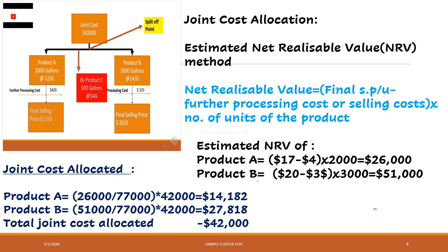In this slide I'm explaining how to allocate cost using the estimated net realizable value method. The formula for net realizable value is: final selling price per unit — please note it is not the selling price at the split-off point — you must use the selling price after further processing cost. So: final selling price per unit minus the further processing cost or selling cost, multiplied by number of units, gives you the net realizable value of the product.